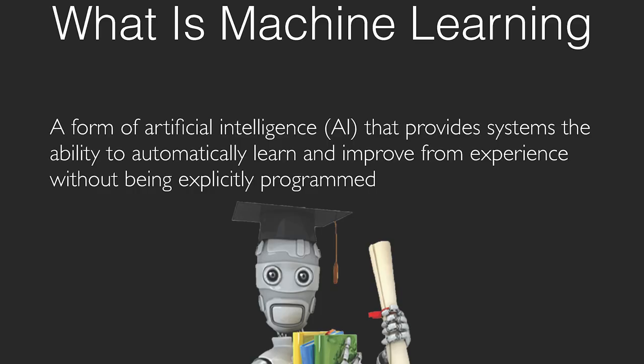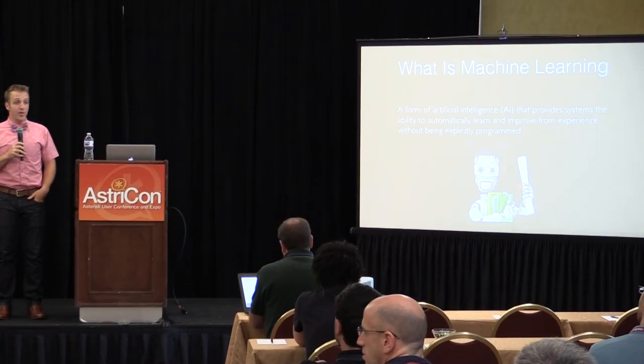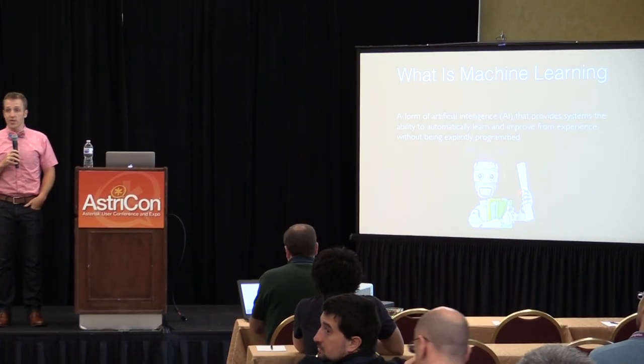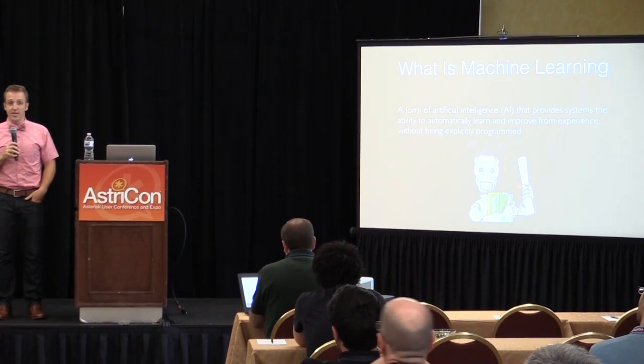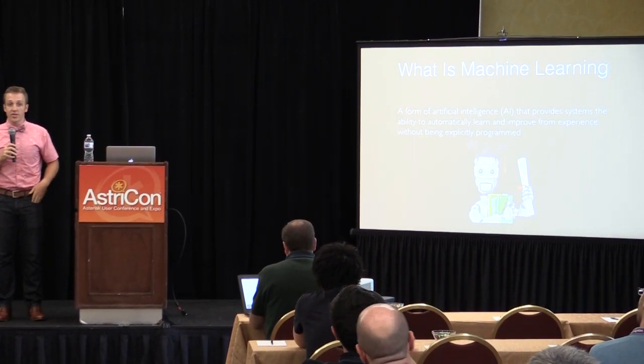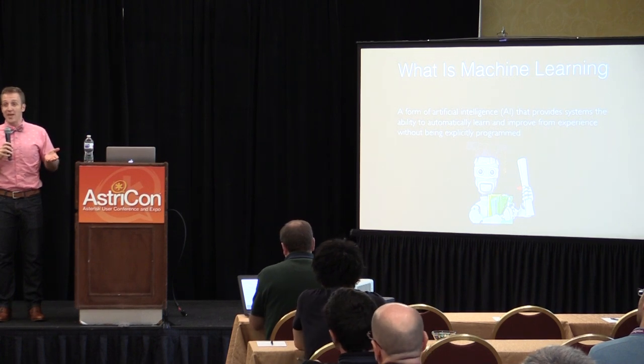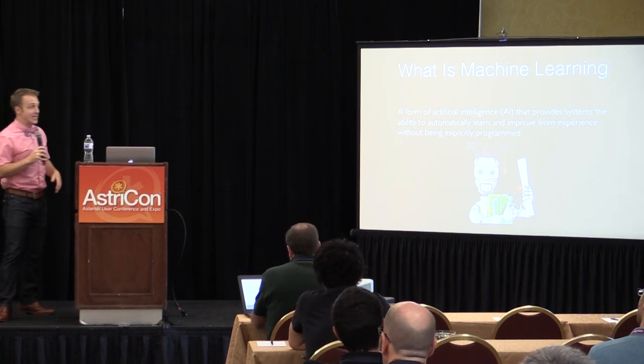So what is machine learning? Machine learning is a form of artificial intelligence that provides systems the ability to automatically learn and improve from experience without being explicitly programmed. We're talking about being able to train a computer to solve a problem without being told the actual answer in advance. We don't have to program it — it just kind of understands based on the input what the output is roughly expected to be.